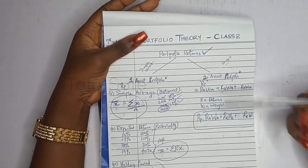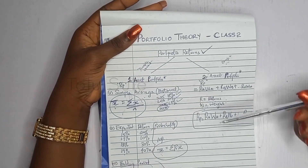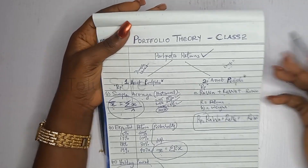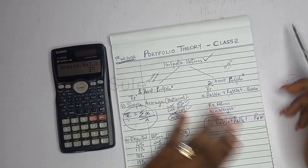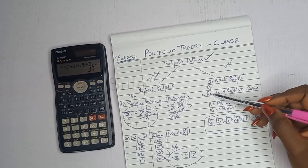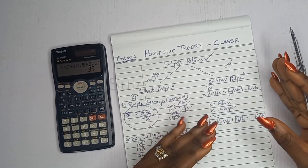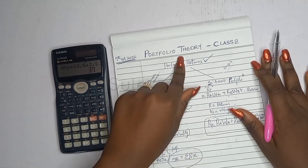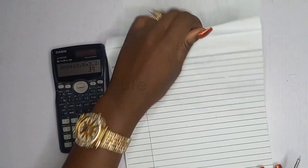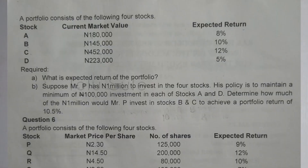We're done with single asset portfolio. I explained the three approaches. For two asset portfolio — which you most likely see in exam section B for SFM — I've already told you how to get the portfolio return. Let us now solve a question in that regard.